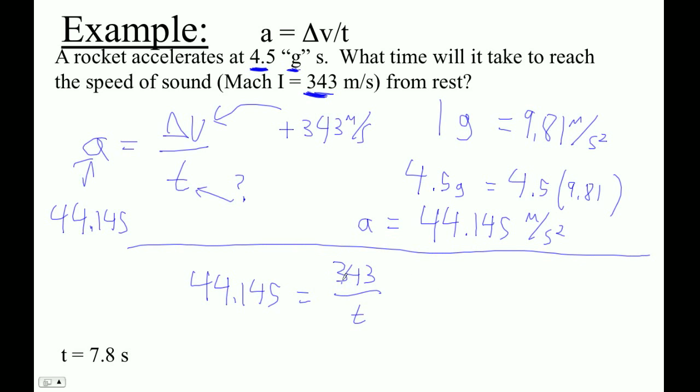So now the question is how do you solve for time? And the answer is that I'm just going to switch these guys out. That's meters per second. This is meters per second squared. And so the T will end up being 343 meters per second divided by 44.145 meters per second squared.